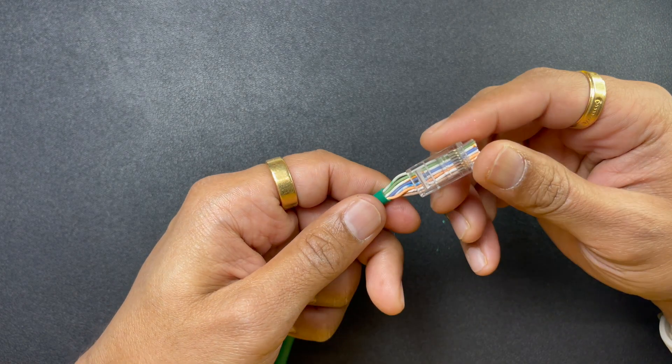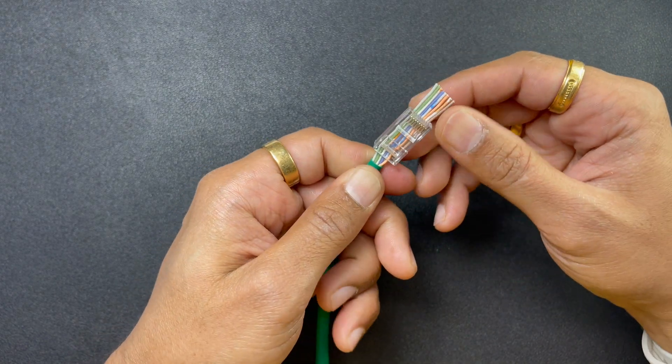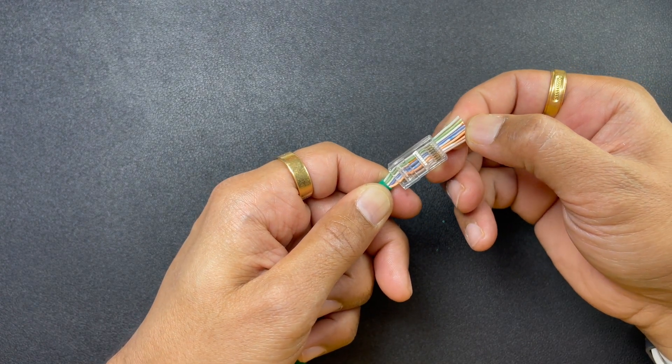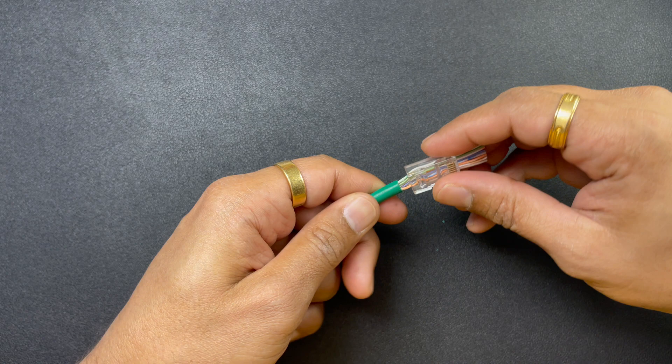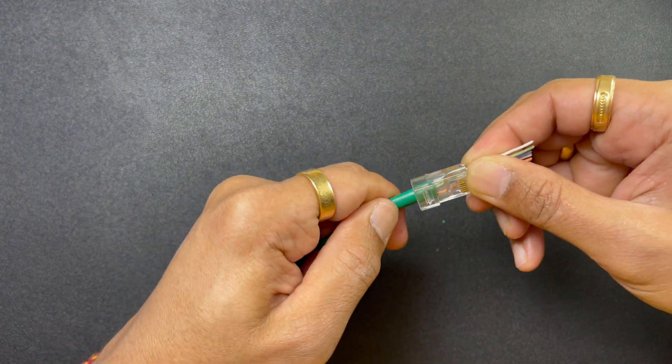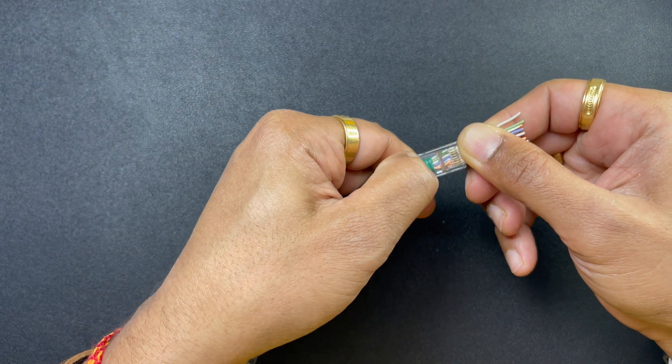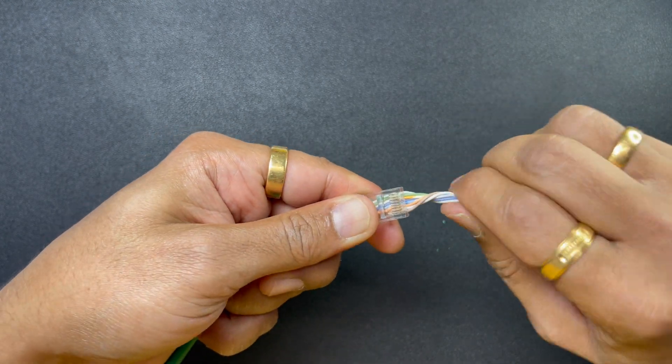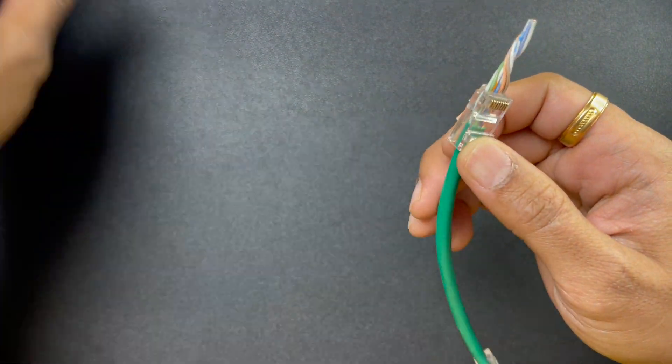Push the cables in. We have white-green, green, white-orange, solid blue, white-blue - they're all good. Let's push that all the way in so we have the jacket here, which is good. Cables are through. I do this just to make it easier.